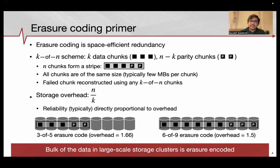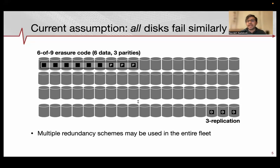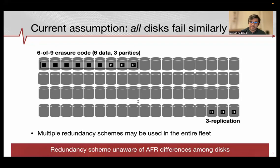Today, the bulk of data in large-scale storage clusters is erasure encoded. An important assumption made when performing these redundancy schemes is that all disks fail similarly. So even though multiple types of schemes may be used in the cluster, all of them are unaware that underlying disk failure rates can actually vary. The reality is that disks do not all fail similarly.